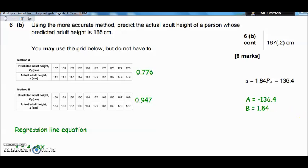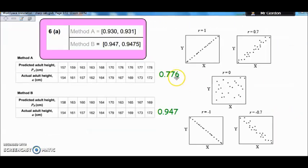Let's have a quick look and see what the R value actually stands for. So the value that you're generating, the PMCC value, tells you how strong the correlation is in the data. So how strong is the correlation between the predicted adult height and the actual adult height for method A? Well, the strength of the correlation is 0.776. And the strength of the correlation for this data is 0.947. Well, what does that mean?